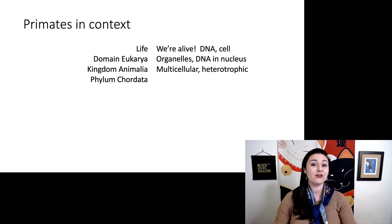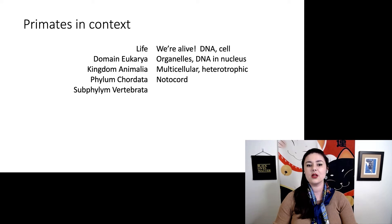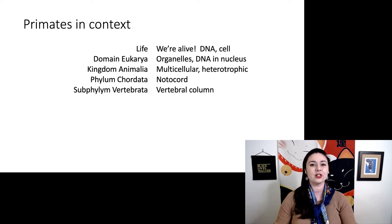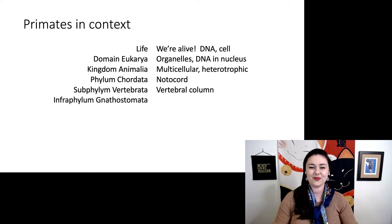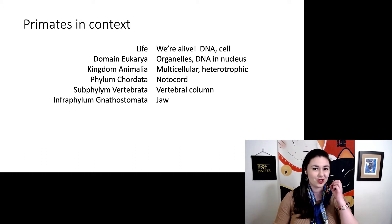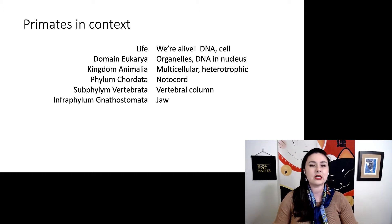We are in phylum Chordata, so that's where we have our notochord. Then we are in subphylum Vertebrata — we have that vertebral column around the notochord. Within that, we are in infraphylum Gnathostomata, which means we have a jaw so we can bite things and eat things that are bigger than our mouths.